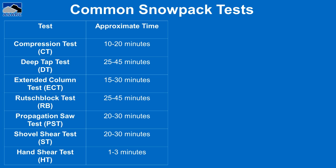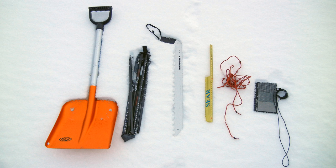I've listed approximate completion times for each test. In general, they will take longer when first performing them, but they will become much quicker as you do more of them as the season goes on. Here is a quick list of equipment useful for performing and evaluating the tests: a shovel, probe, snow saw, ruler, rutschblock cord, crystal screen, and a loupe. You can get by with just a shovel and a probe for most of these tests, but the rest of this gear is light, inexpensive, and really helps to improve quality and speed the tests up.